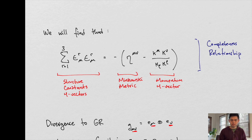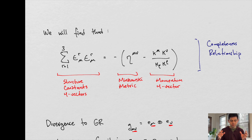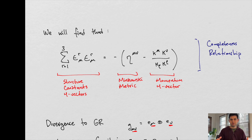This is the equation — this is a very interesting equation because it gives us a relationship between the structure constants associated with our gauge field. Our structure constants fundamentally construct the basis system at each point in space. They are related to the Minkowski metric — flat space. So essentially, our Minkowski metric plus or minus something gives us a relationship related to our structure constants.